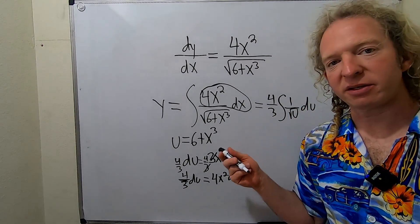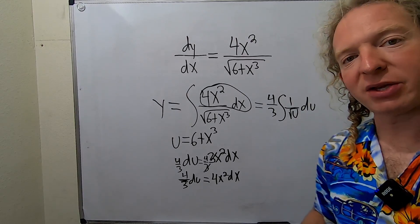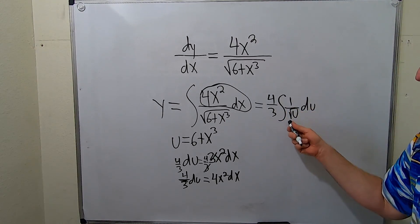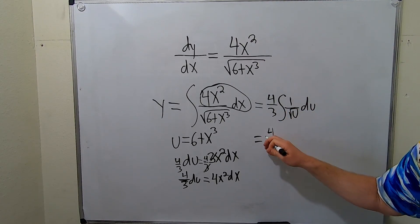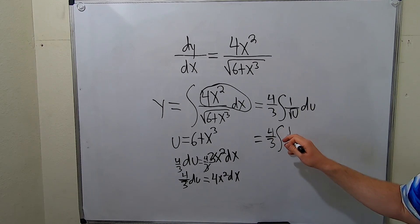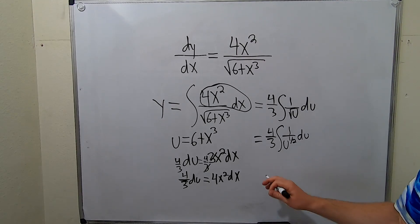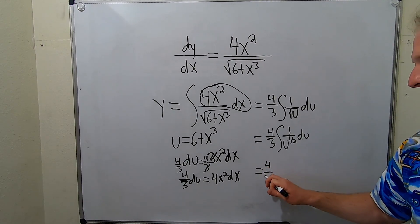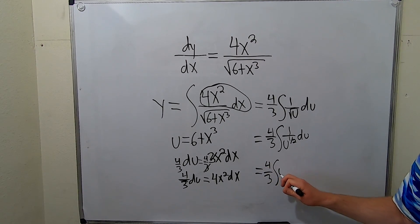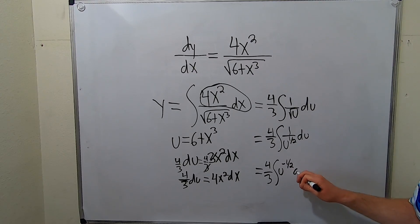Whenever you have something like this, a square root, you write it as u to a power. So this is 1 over u to the 1 half. So it's really this. And then you can bring it up. Because you want to have it to a power so you can use the power rules. This is 4 thirds integral u to the negative 1 half du.